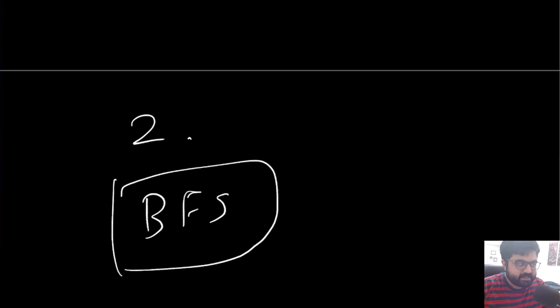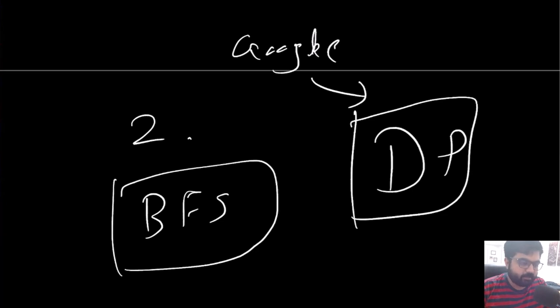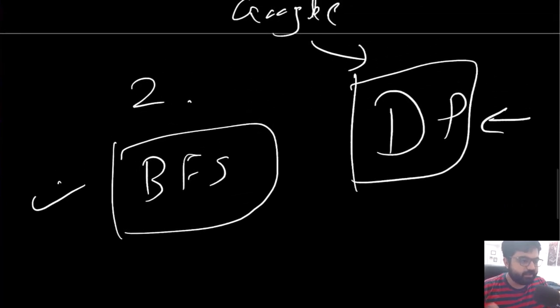There are two ways to solve this problem. The first is to treat each value as a node and use breadth-first search, treating it as a graph problem. The second is dynamic programming, which is what Google loves and what I'll demonstrate. Let me know in the comments if you'd like the BFS solution too.